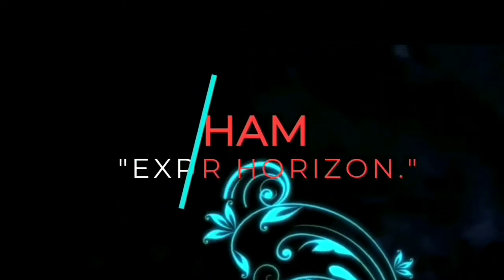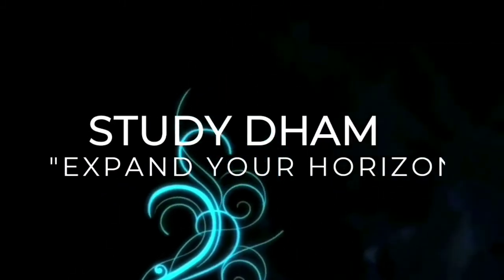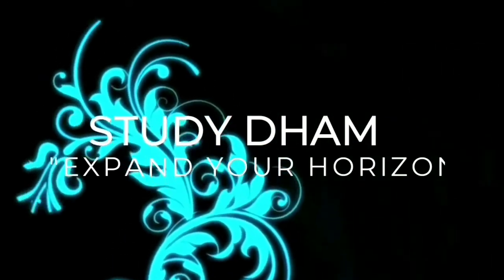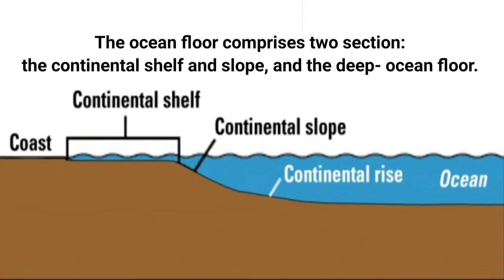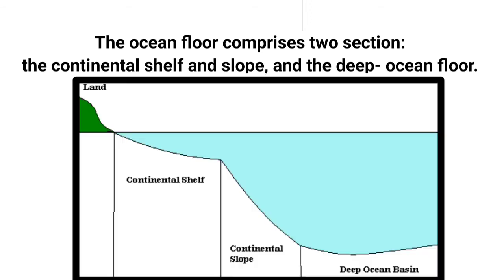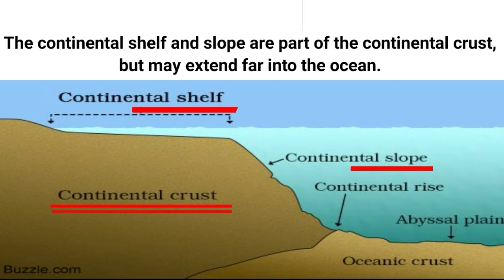The ocean floor comprises two sections: the continental shelf and slope, and the deep ocean floor. The continental shelf and slope are part of the continental crust but may extend far into the ocean.